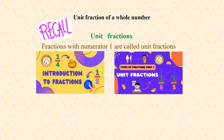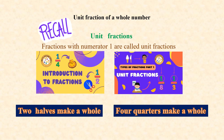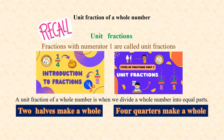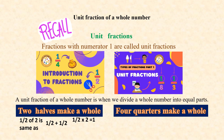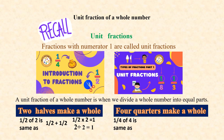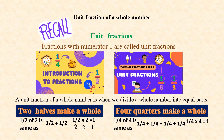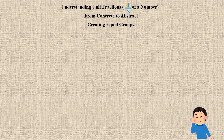You know that two halves and four quarters make a whole. A unit fraction of a whole number is when we divide a whole number into equal parts. What is 1/2 of 2? It is the same as 1/2 + 1/2, which is also the same as 1/2 × 2 = 1. You can also write this as 2 ÷ 2 = 1. We can say the same about 1/4 of 4: it equals 1/4 + 1/4 + 1/4 + 1/4, or 1/4 × 4 = 1, and also 4 ÷ 4 = 1.